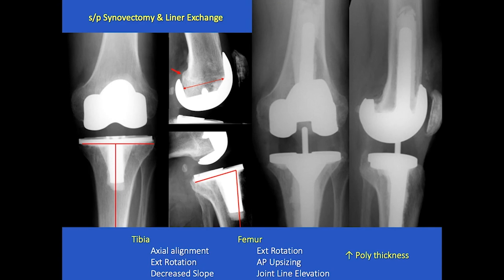Here's an example: an attorney from the east coast on Coumadin who kept having recurrent hemarthrosis. He got multiple arthroscopies and liner exchanges, then came to me with a 15-degree flexion contracture and still having recurrent bleeds. Looking at his x-ray, you can see axial malalignment, a small femur that could have been much bigger with more AP sizing, and a huge tibial slope.